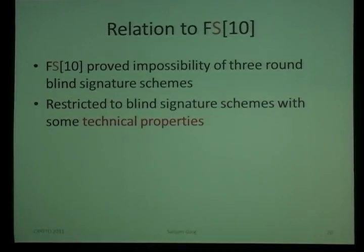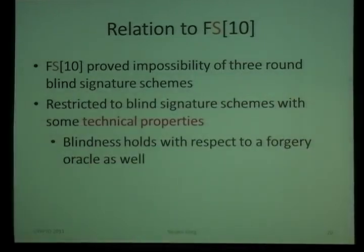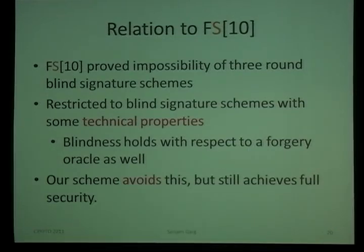Dominique, along with Mark Fischlin, had an impossibility result for three-round blind signature schemes. However, to make the problem tractable, they restricted themselves to blind signature schemes satisfying certain technical properties — specifically, that blindness holds even against a cheating signer who has oracle access to forge signatures on other messages for arbitrary public keys. Our scheme avoids this property, thereby circumventing their impossibility result while still achieving full security in two rounds.